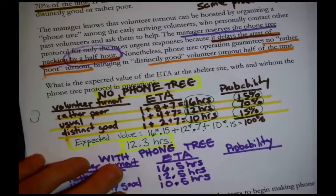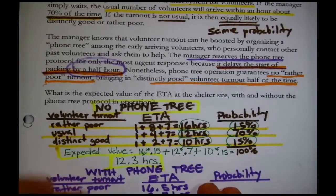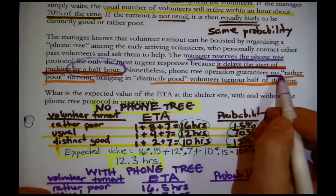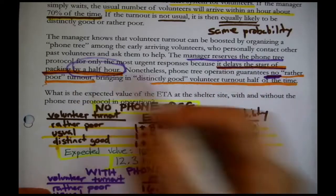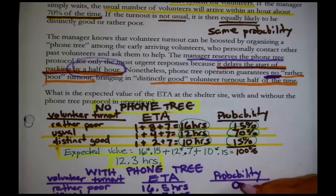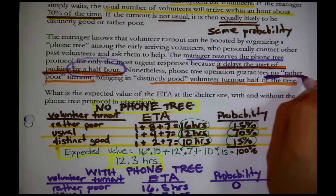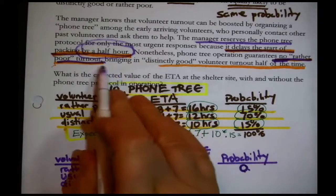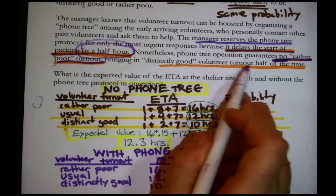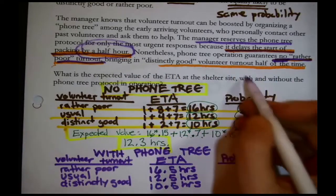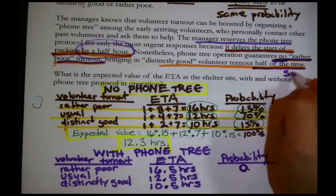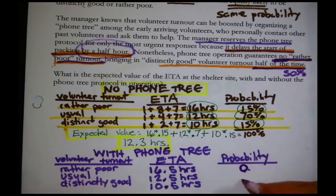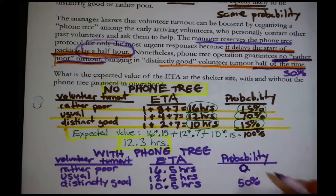What really changes with the phone tree is the probabilities. The phone tree operation guarantees no rather poor turnout — that's a probability of zero. It brings in distinctly good turnout about half the time, so that's 50%. The remaining 50% goes to usual turnout — the only option left — and these must add up to 100%.